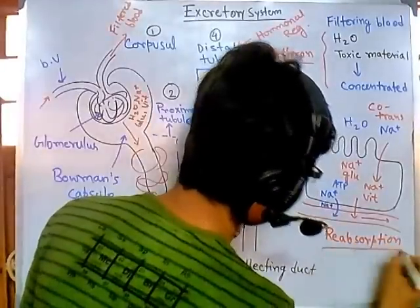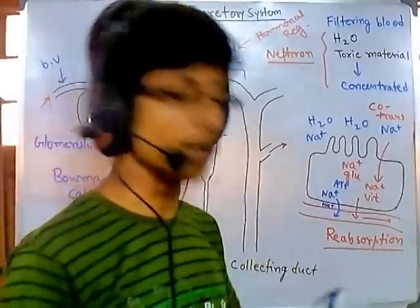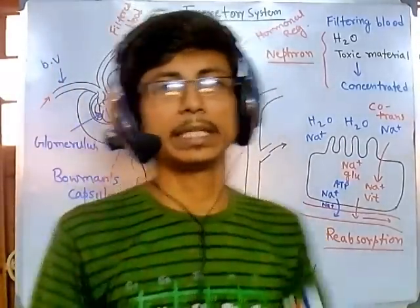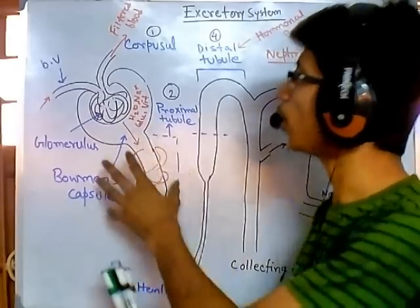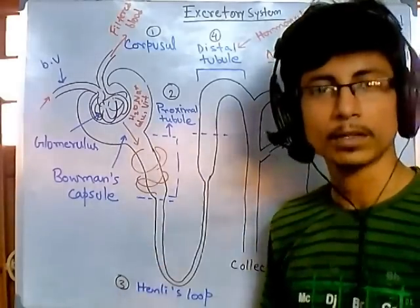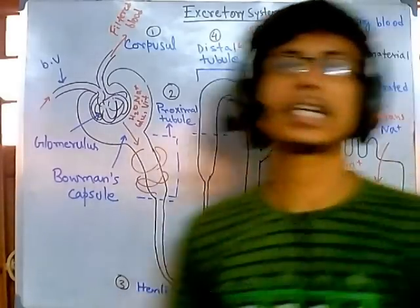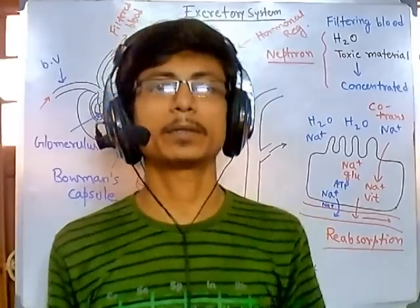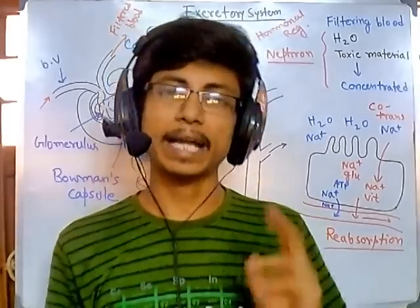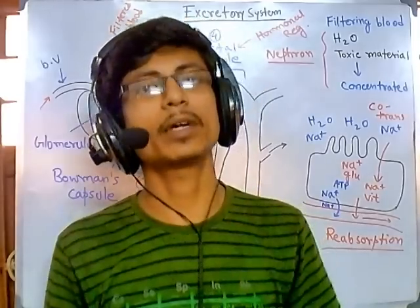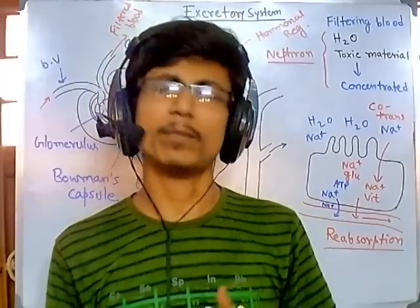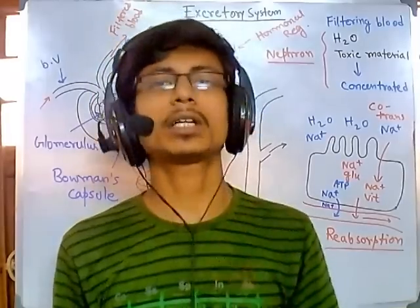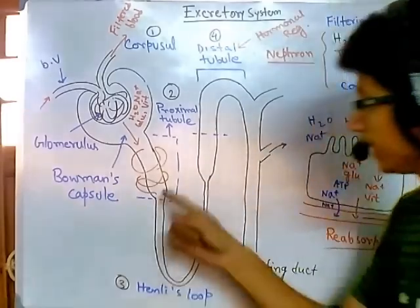This is called reabsorption of necessary nutrients back into our blood, and it is carried out by the proximal tubule — the second section of our nephron. Now let's talk about the third important task, which is to concentrate our urine. That is the most fascinating task, and it is carried out by Henley's loop.